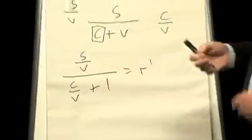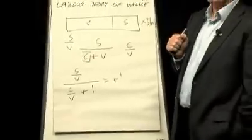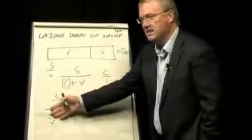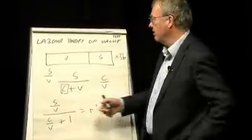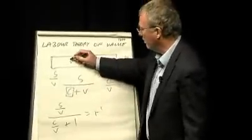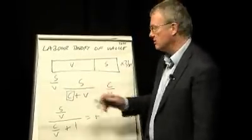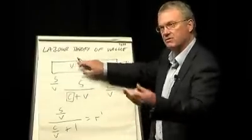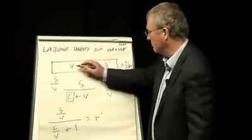Now, he calls it the tendency of the rate of profit to fall. There are counteracting influences which can delay the onset of this effect. One of them is if you have improvements in productivity in wage goods producing industries, the amount of value that's needed to pay wages, if you like, or to feed the workers, can reduce.